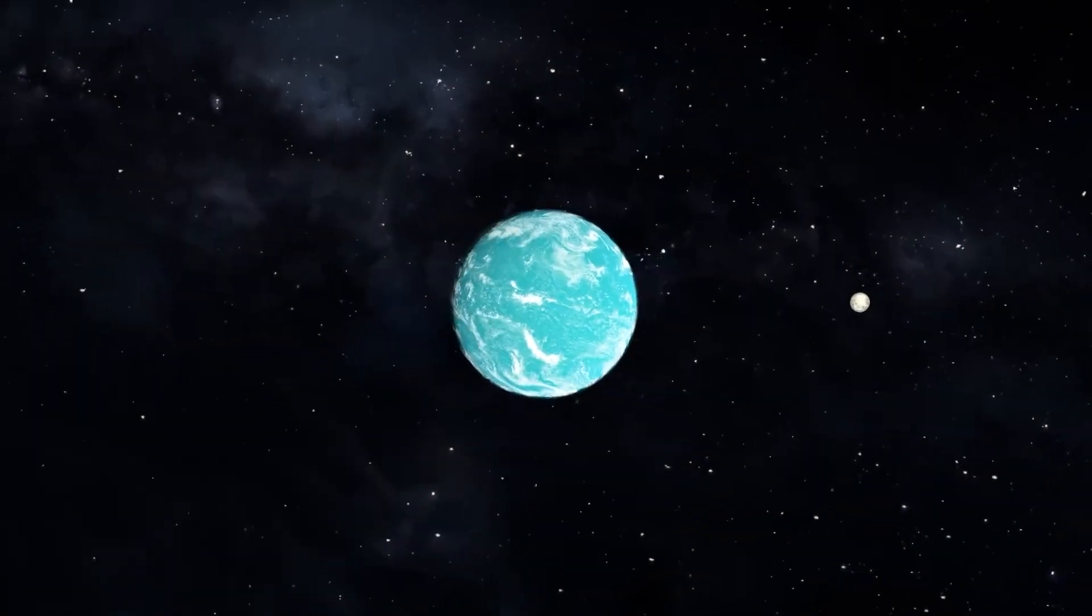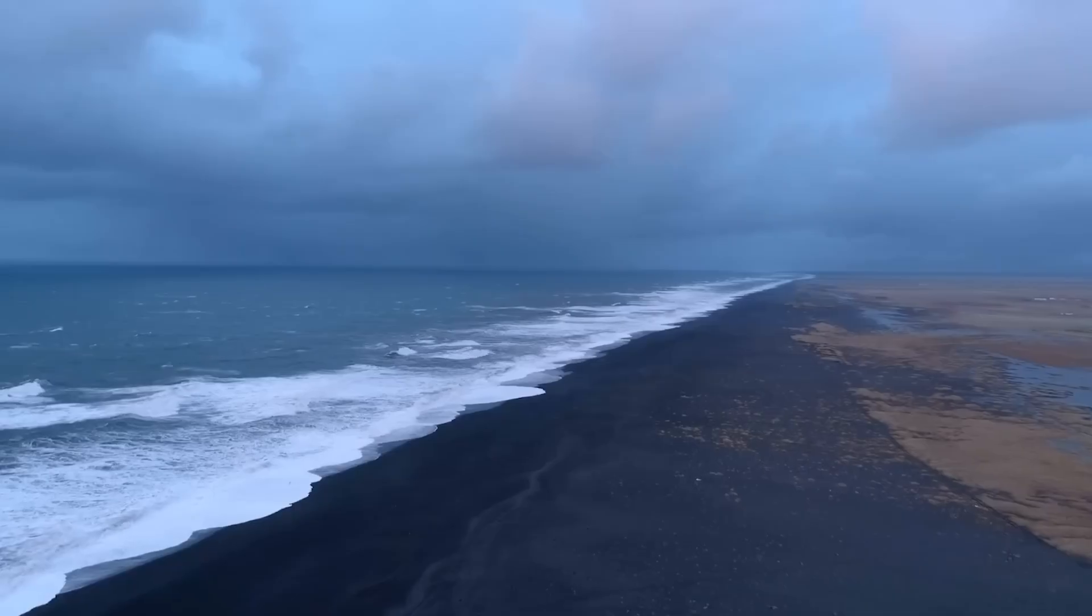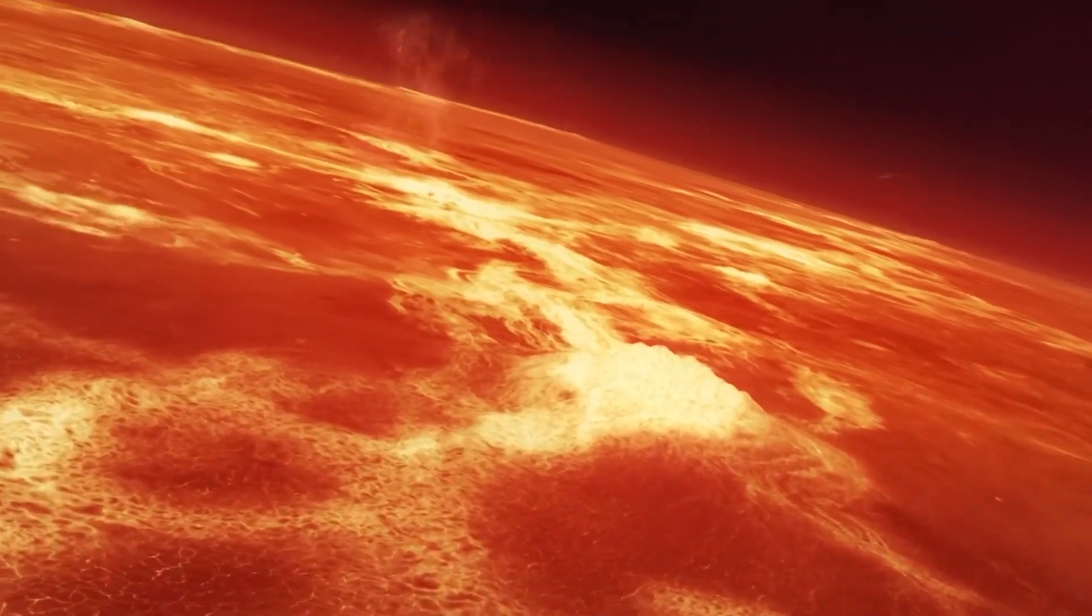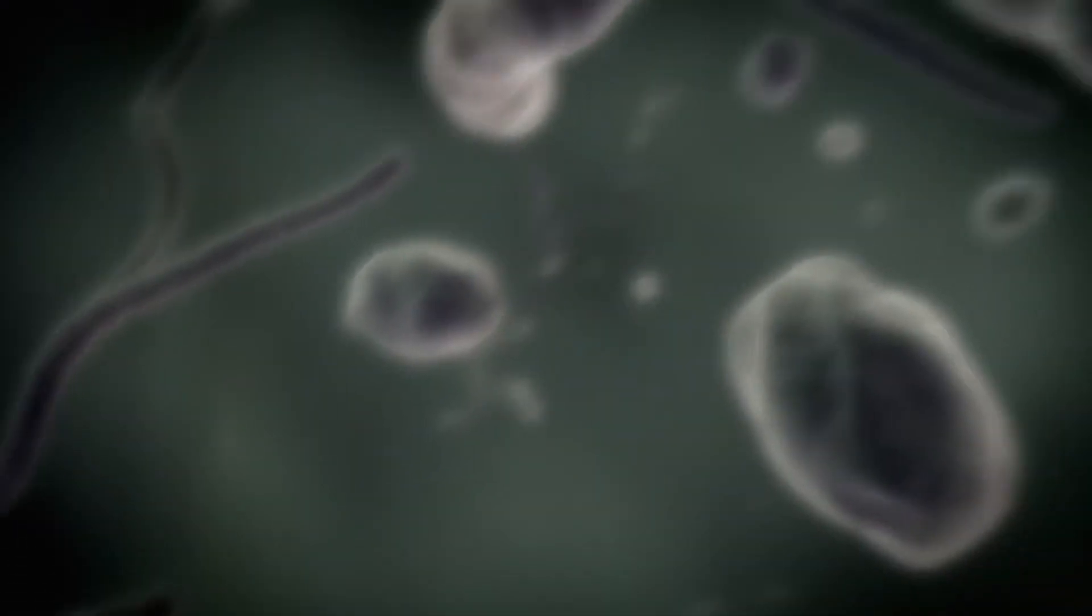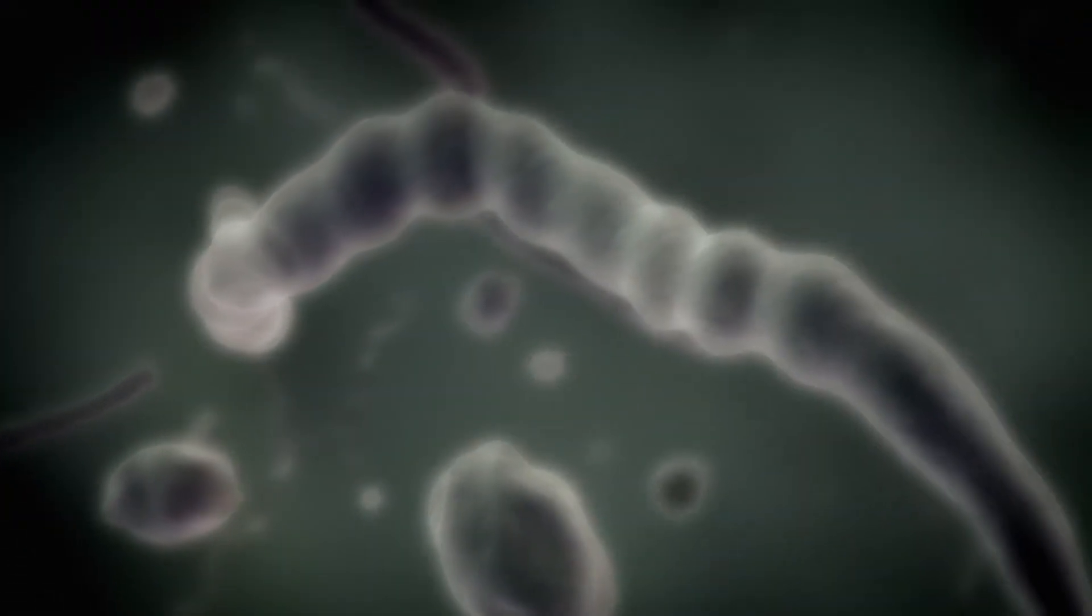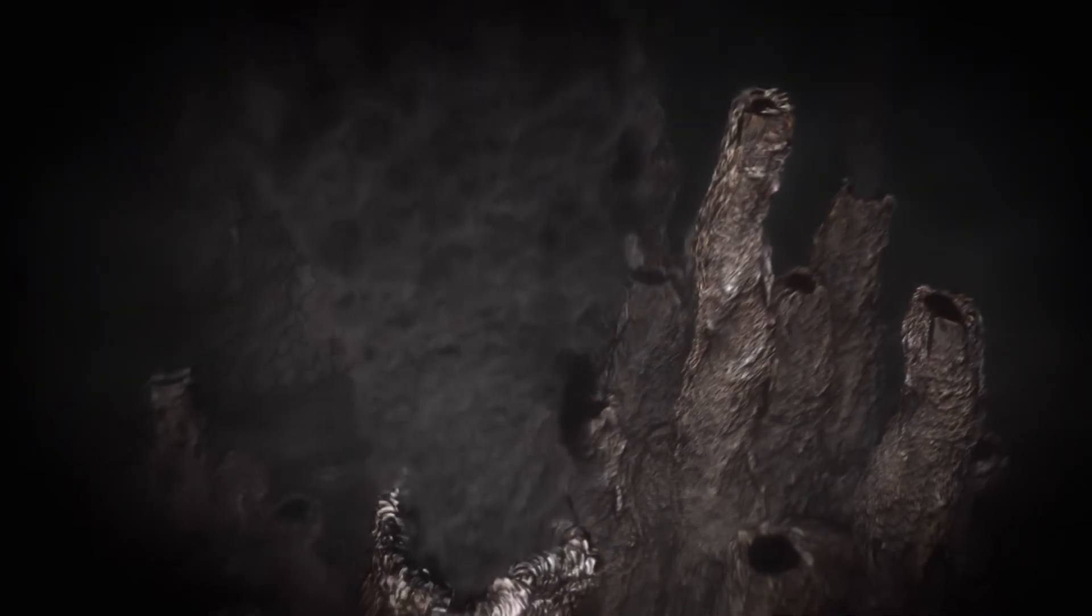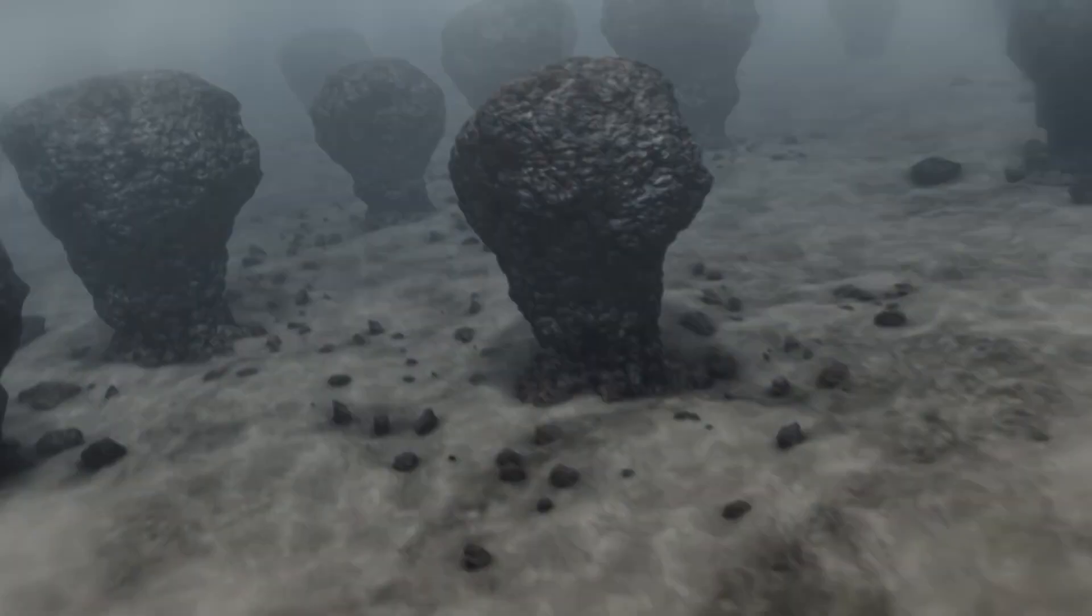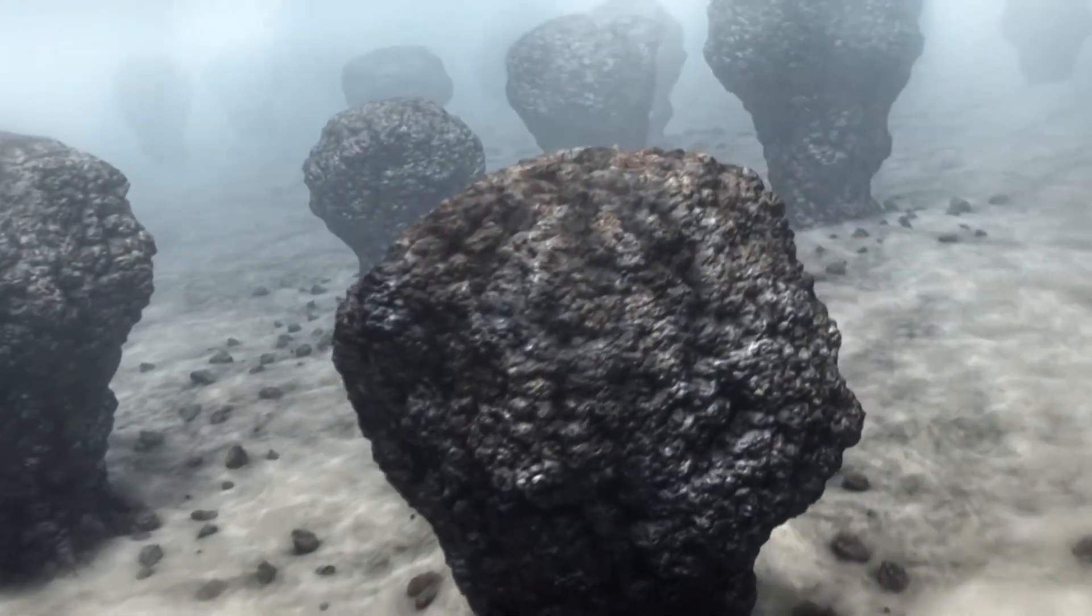It lived in a world almost unimaginable to us. A world of iron-rich seas and volcanic seabeds. A planet wrapped in darkness, where radiation still pierced the surface. LUCA may have lived near the same hydrothermal vents where life first formed. Or perhaps in tide pools, clinging to rocks in the shadows of chemical chaos. Its world was microscopic. But its legacy? Massive.